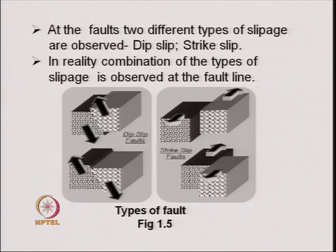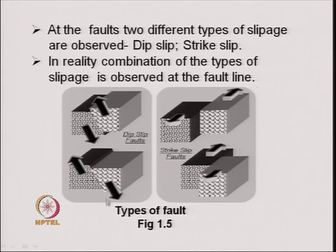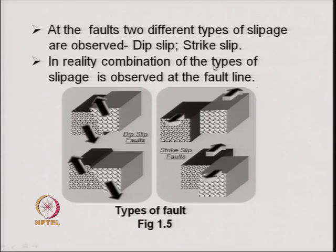At the fault, two different types of slippages are observed: the dip-slip and the strike slip. In the dip-slip, the two plates move on an inclined plane. Whereas in the strike slip, two plates move parallel to each other, forming what is known as the transform boundary. In reality, a combination of different types of slippage is observed at the fault line.